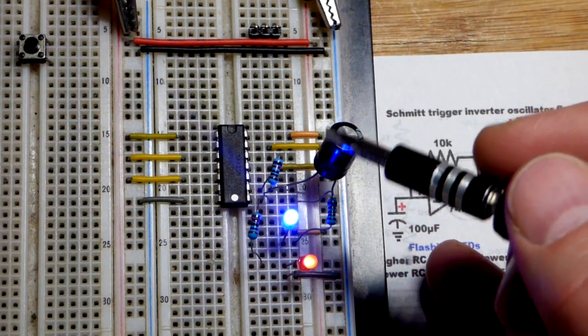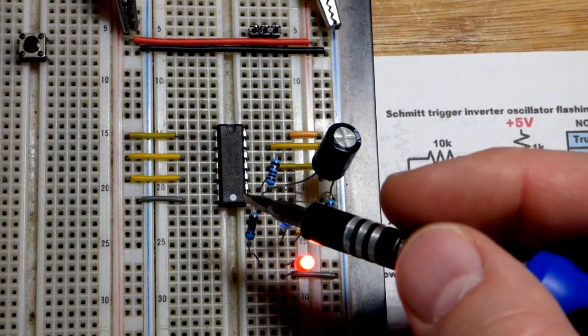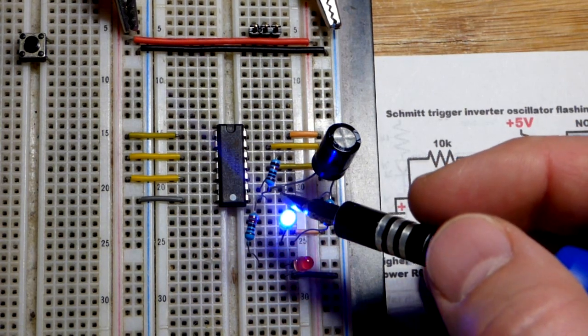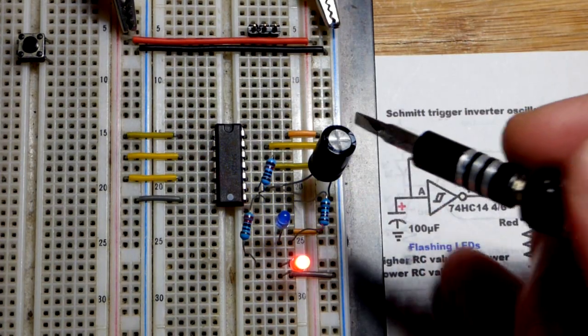Then the output discharges the capacitor until the capacitor voltage gets to the lower threshold voltage. Then it has a low enough voltage to flip the output high, it starts charging again, and so on.